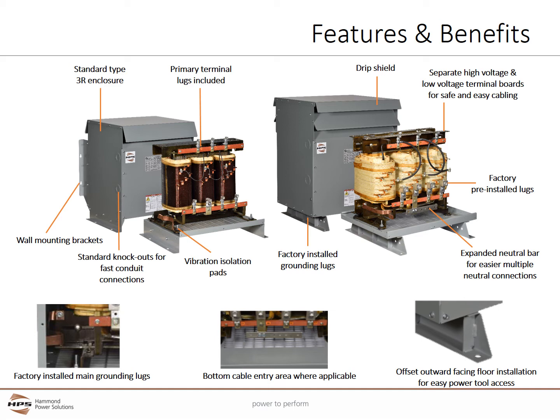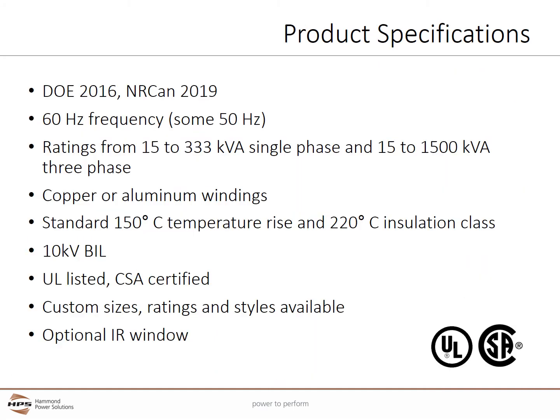The neutral bar is expanded to allow the installation of additional mechanical lugs. The primary and secondary terminal boards are separated for safe and easy cabling. The core and coil are mounted on vibration isolation pads to reduce audible noise. The HPS Sentinel-G meets U.S. DOE 2016 and Canadian NARCAN 2019 efficiency regulations. Most voltages are designed for 60 Hz frequency, although some, such as 380 volt primary, are at 50 Hz.